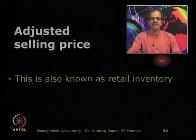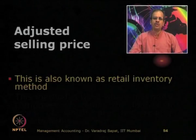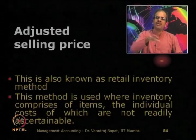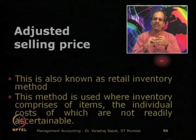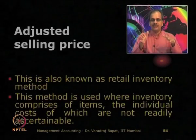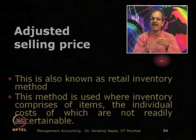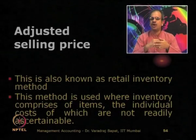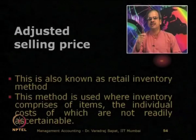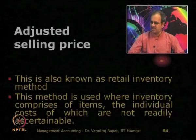There are also some more methods — one is known as adjusted selling price. Sometimes it is very difficult to even know the cost of items because they are purchased at a number of times and there may not be a proper record of cost at different times. But the selling price may be known — especially in the retail industry, because the MRP is given on the pack. It may be easy to know the selling price but not easy to know the cost. That is why this method is known as the adjusted selling price method.